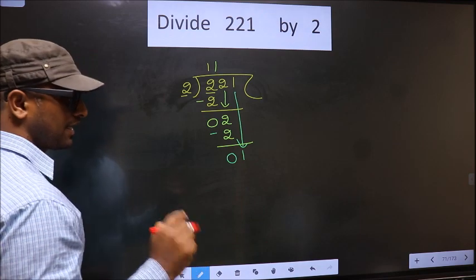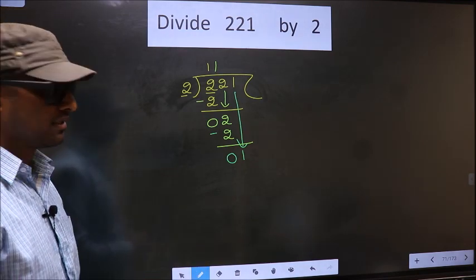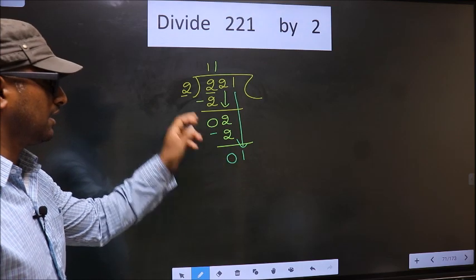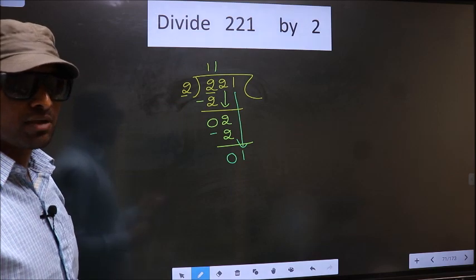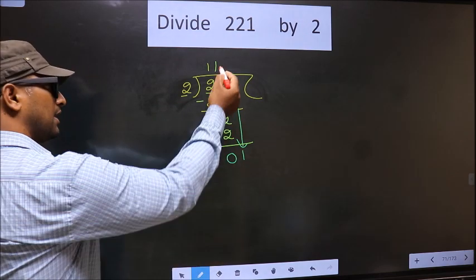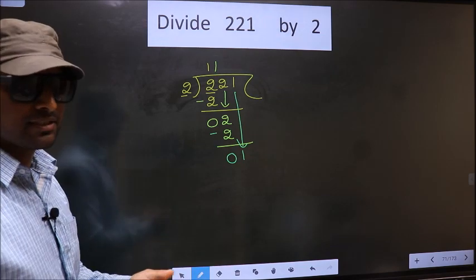This is where the mistake happens. And the mistake is this: Here we have 1, here 2. 1 is smaller than 2. So what many do is they put a dot and take 0 here, which is wrong.